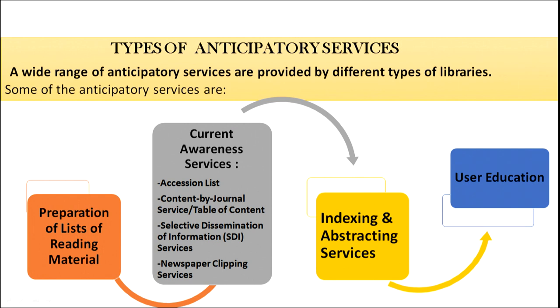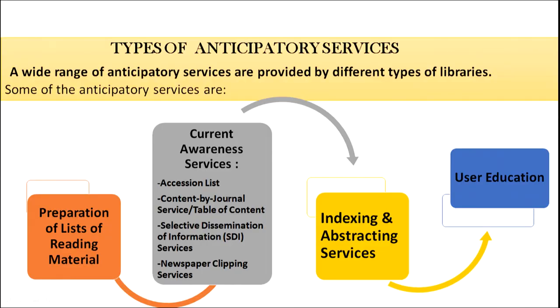Types of anticipatory services include: preparation of lists of reading material; current awareness services, which involve preparing a current detailed list of book accessions sent to users; content by journal service, which provides the table of contents of magazines and journals to users; selective dissemination of information (SDI), where selective information on a specific subject is given to users; newspaper clipping services, where relevant newspaper articles on specific subjects are provided; indexing and abstracting services; and most importantly, user education — educating users about where information in the library has been placed, whether in print or electronic format, and how to access it through various orientation programs.